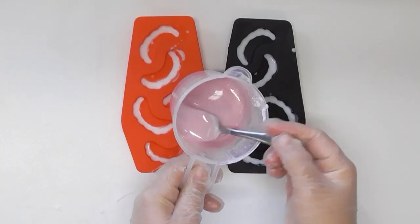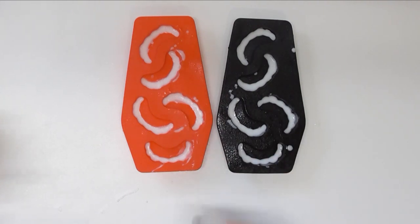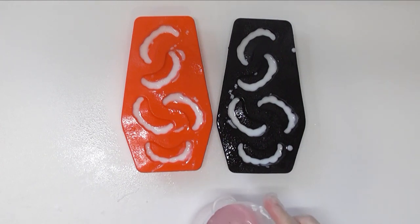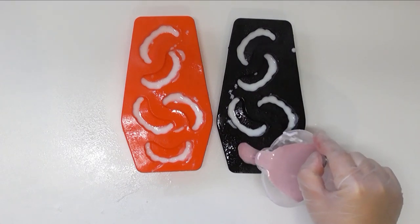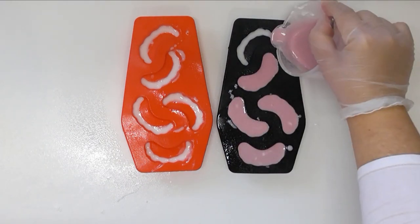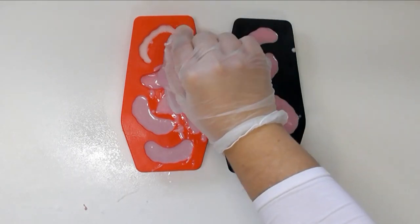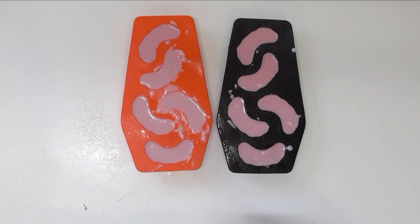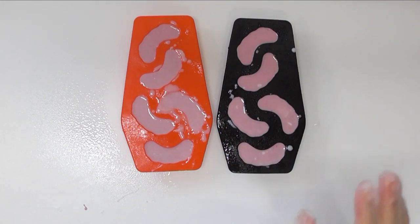All right, so now that that is all nicely mixed in, I'm just going to grab my rubbing alcohol and spray the tops of these. That is just to help the two layers actually bond together. Now all I'm going to do is pour this melt and pour over the top. Okay, I'm going to give that just a quick spritz with some alcohol, put that spare melt and pour into my water bath, and then we will come back and unmold these in a bit and see what we've got.